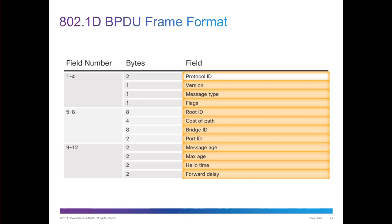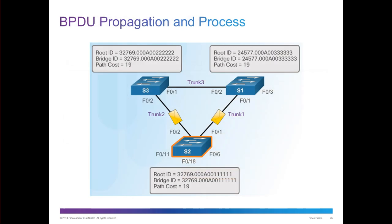BPDU frame formats contain the appropriate fields. In BPDU propagation, as switches come online they send root bridge ID, bridge ID, and path cost to everyone, allowing an election to take place to determine the root bridge. When first turned on, all switches think they are the root bridge until convergence. S1, S3, and others send BPDUs and S1 eventually becomes the root bridge because it has the lowest root ID — the lowest priority number.